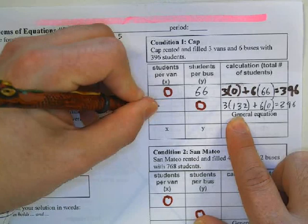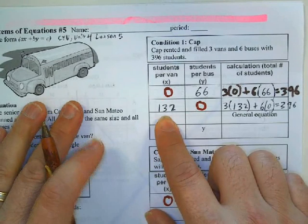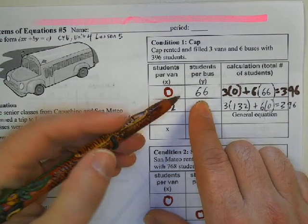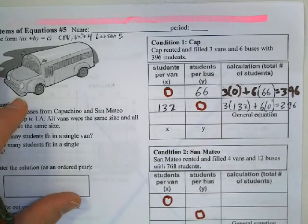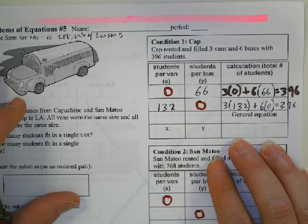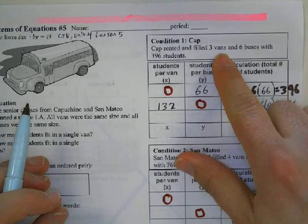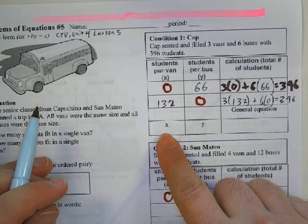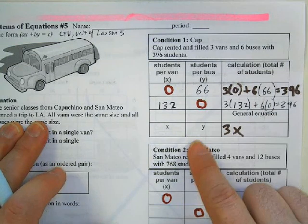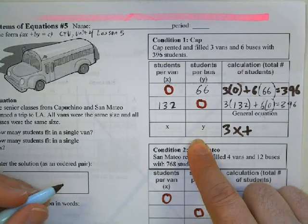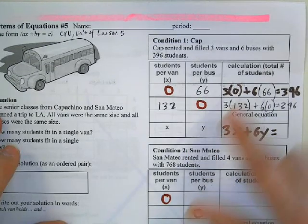So if we do 396 divided by three, we figure out that we're going to have 132 students. Now clearly it makes no sense that we would have 132 students in a single van, but the idea was to get the general equation. If there are three vans, the number of students on the van is going to be 3x. If we get six buses, the number of students combined on the buses is going to be 6y, and the equation is going to be 3x + 6y = 396.